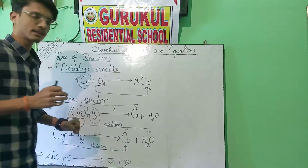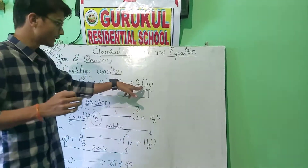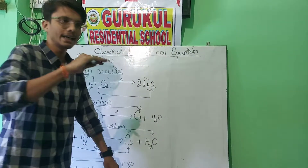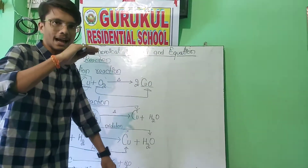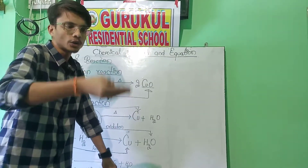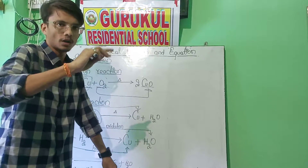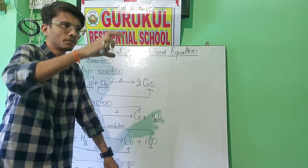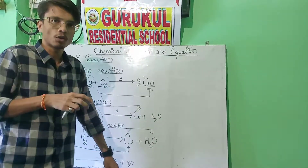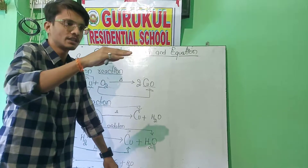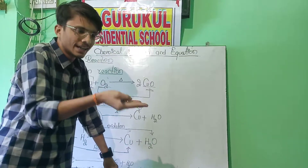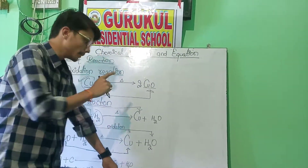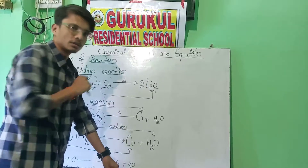When this reaction is happening, when this copper oxide forms, a gray or black color coat will form on the vessel. Actually, when we use a copper vessel, we see after a long time there is a gray color layer forming on the vessel. Why? Due to this reaction.